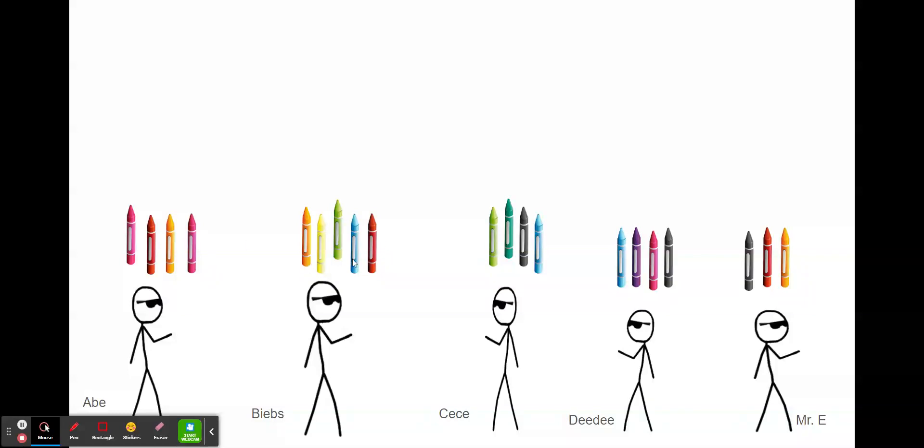The Biebs, who gave the least, ended up with the most. Mr. E, who gave the most, ended up with the least. This is a really classic example of the free rider problem, where people can just not make a donation but benefit from the contributions of others.